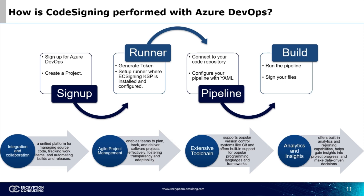DevOps provides a platform for agile project management that enables teams to plan, track, and deliver software projects effectively. DevOps' extensive tool chain supports popular version control systems like Git and supports many popular programming languages and frameworks. In addition, DevOps provides analytics and insights to assist in making data-driven decisions based on project progress.